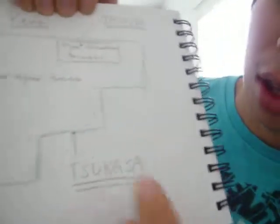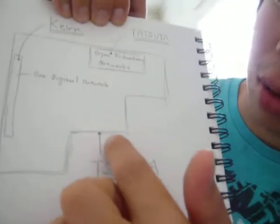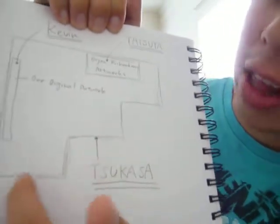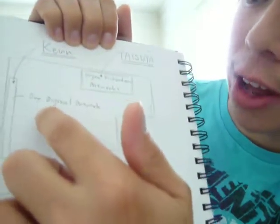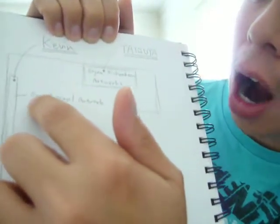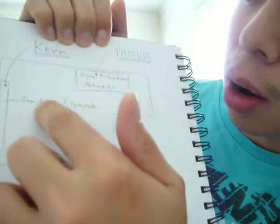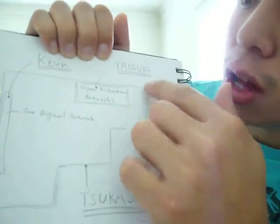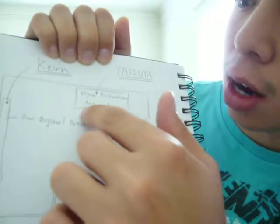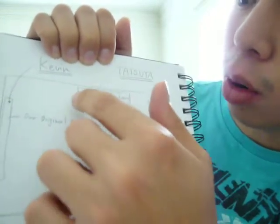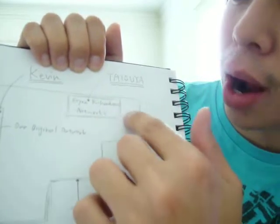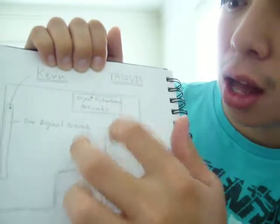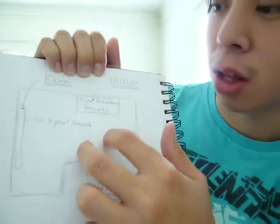Look at this picture. Tsukasa is in charge of creating the architecture of our gallery. Kevin is in charge of creating our original artwork. And I'm in charge of creating a stand for showing Elin Richard Stone's artworks. This is our Project 6.